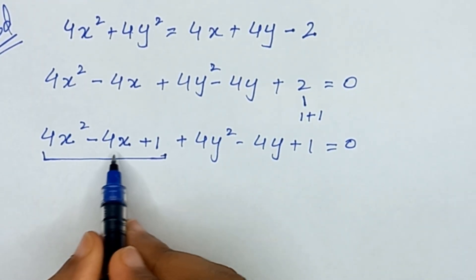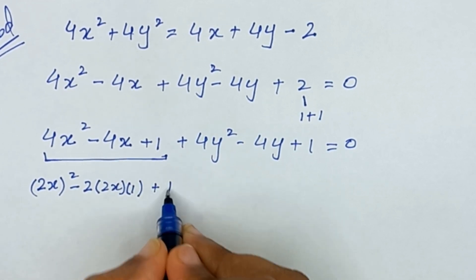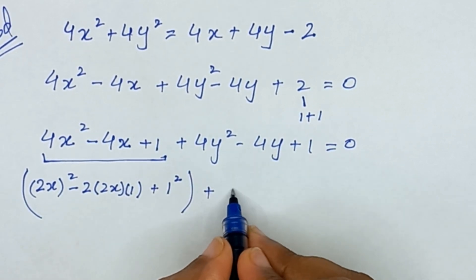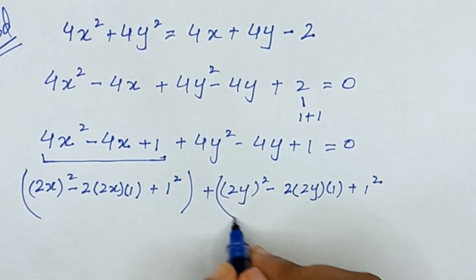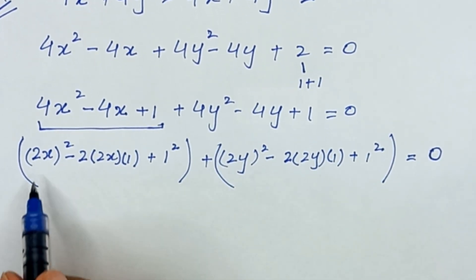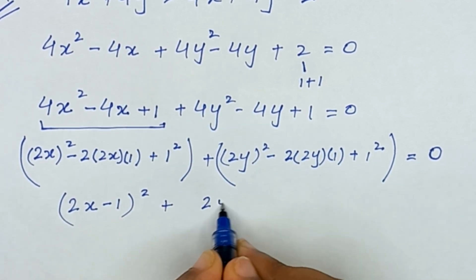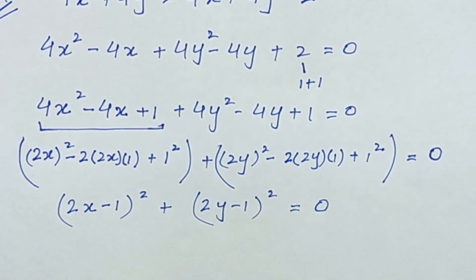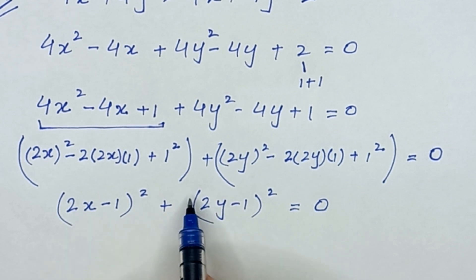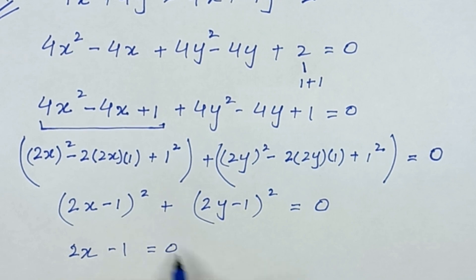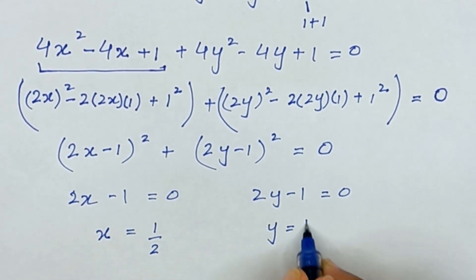Now 4x² - 4x + 1 is the form (2x)² - 2·(2x)·1 + 1² = (2x - 1)². Similarly, 4y² - 4y + 1 = (2y - 1)². So the equation becomes (2x - 1)² + (2y - 1)² = 0. Since the sum of two squares equals 0, both must be 0. Therefore 2x - 1 = 0 and 2y - 1 = 0, giving x = 1/2 and y = 1/2.